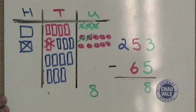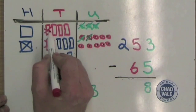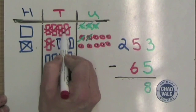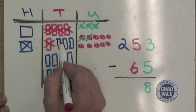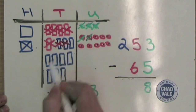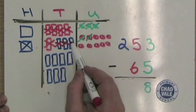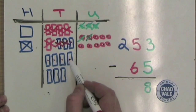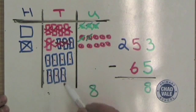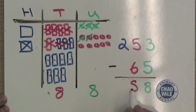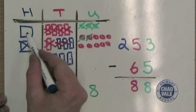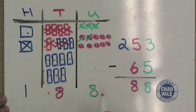We can now subtract six towers of 10: one, two, three, four, five, six. We count how many towers of 10 we have left and write it in the tens column. Then we count how many hundreds we've got left and write it in the hundreds column.